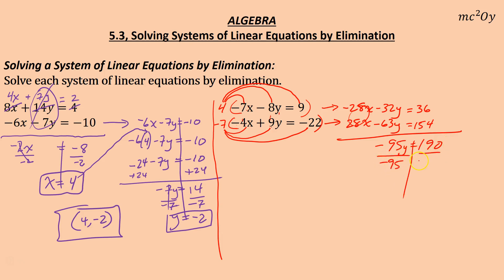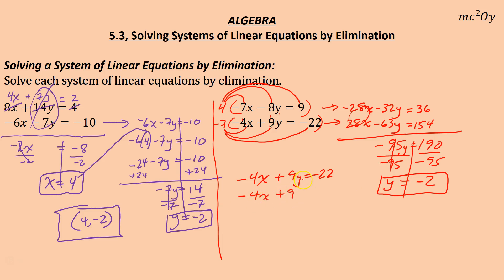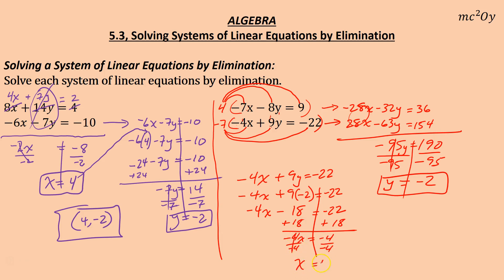Divide both sides by negative 95: y equals negative 2. Substitute negative 2 into the bottom equation: negative 4x plus 9 times negative 2 equals negative 22, giving negative 4x minus 18 equals negative 22. Add 18 to both sides: negative 4x equals negative 4. Divide by negative 4: x equals 1. So the ordered pair is (1, negative 2). You can double check it by substituting in, and it will work out.